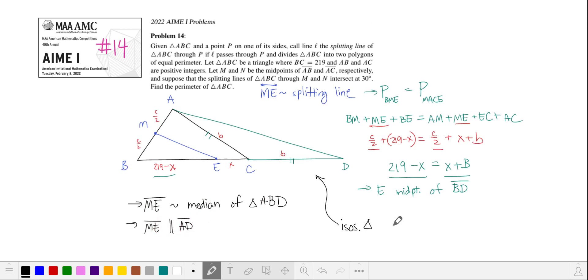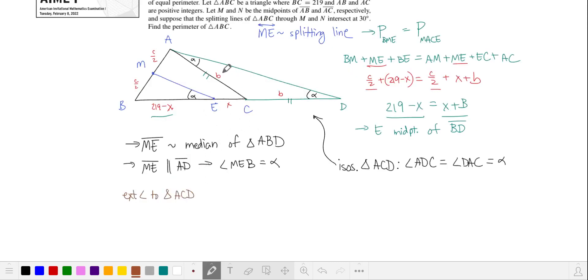We also see isosceles triangle ACD and the two base angles are congruent. So let's call that alpha and we'll mark it in the diagram. Because ME is parallel to AD, we also have this angle is alpha. There's the exterior angle to isosceles triangle ACD. That's ACB, which is equal to the sum of the two other angles. That's 2 alpha.